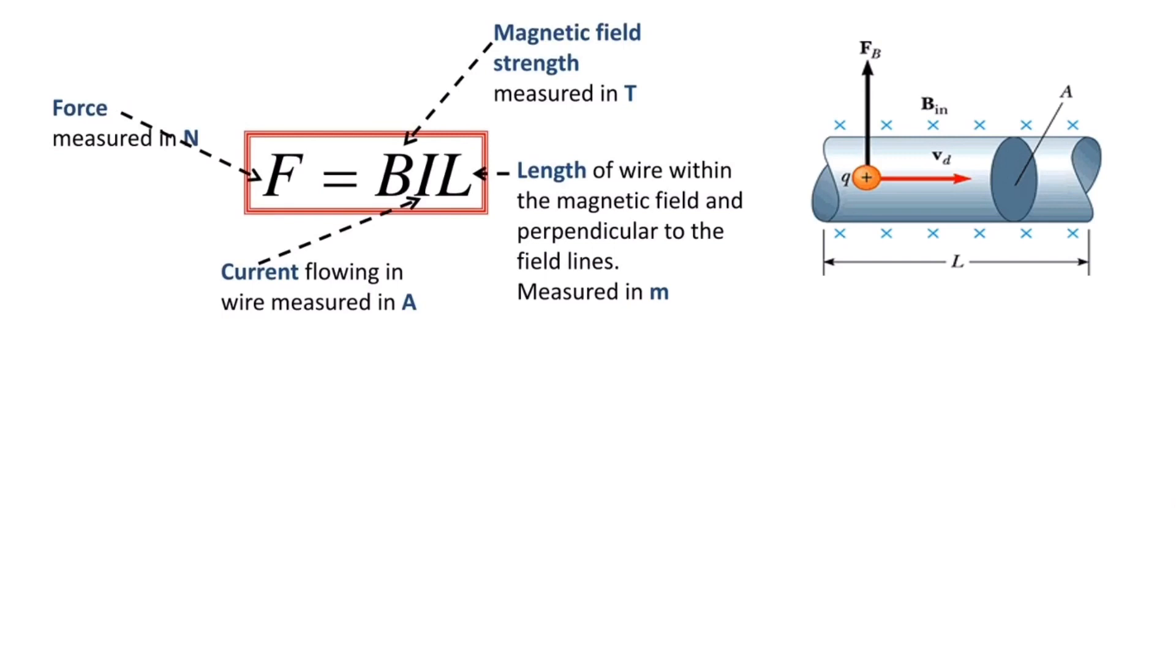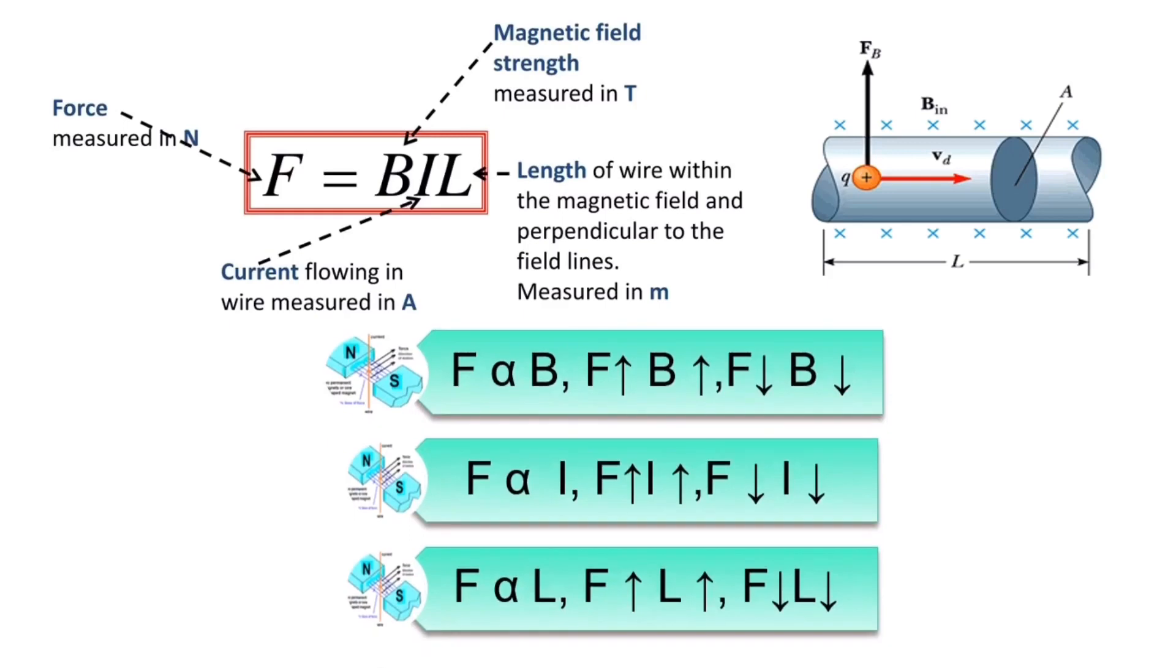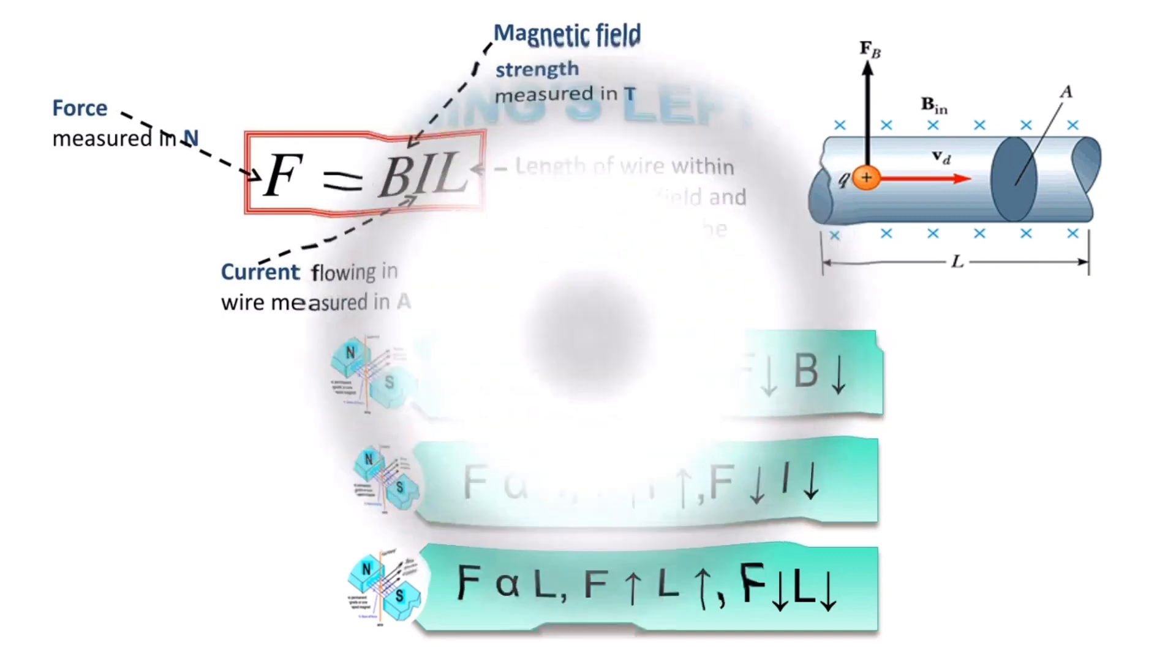After certain trials of the experiment, it is proved that the displacement of the rod is largest when B and I are perpendicular to each other. In this condition, we can use a simple rule to find the direction of the force on the conductor.